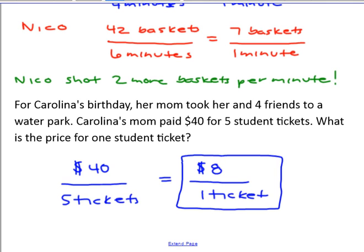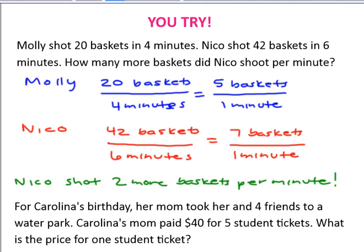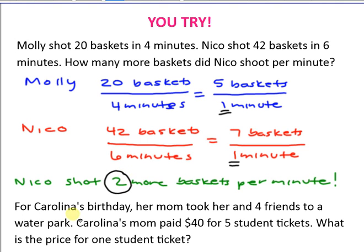Let's take a look at some of our answers. For the first problem: Molly shot 20 baskets in 4 minutes and Nico shot 42 baskets in 6 minutes. How many more baskets did Nico shoot per minute? I set up a rate for Molly — 20 baskets in 4 minutes — and found the unit rate: 5 baskets per minute. For Nico — 42 baskets in 6 minutes — the unit rate is 7 baskets per minute. 7 minus 5 is 2: Nico shot 2 more baskets per minute.